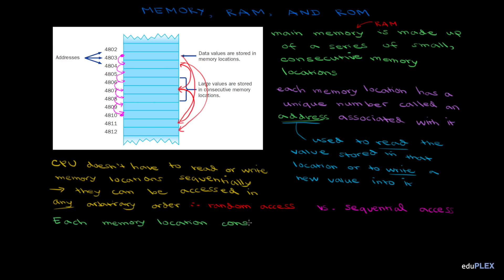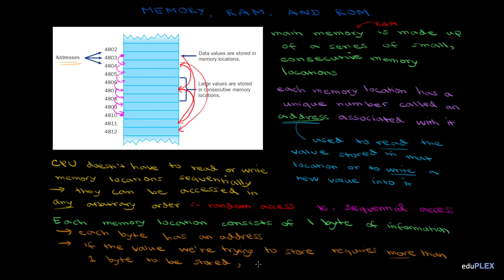Each memory location consists of one byte of information. That's the same byte that we're talking about when we say your phone has 64 gigabytes of storage or your computer has 8 gigabytes of RAM. One byte makes up one memory location, so we can say that each byte has an address. If the value we're trying to store requires more than one byte to be stored, which happens frequently, we need to use multiple consecutive bytes to store that data. So if I had a data value that I wanted to store but it needed four bytes of memory, it'd take up four consecutive memory locations, just like this.